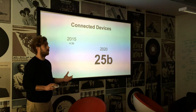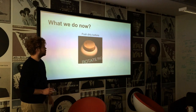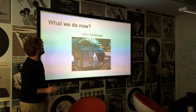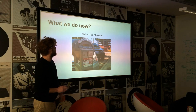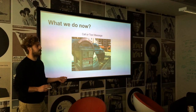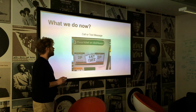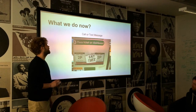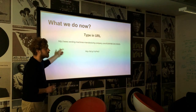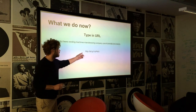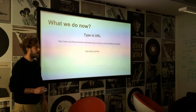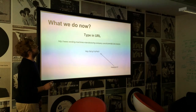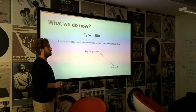We need a way to interact with all of these devices. So what are we doing at the moment? We push dirty buttons on vending machines. We use phones, send text messages to pay for services — and that's all kind of good until someone can't get the phone number. Or we type in a URL, which takes about 15 minutes, or we use a shortener. The URLs are usually on little stickers and you never know where you're going to end up.